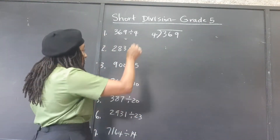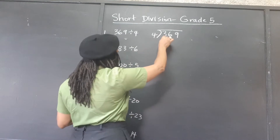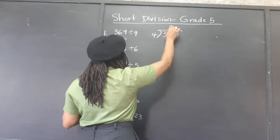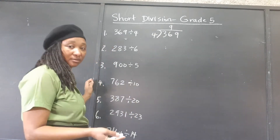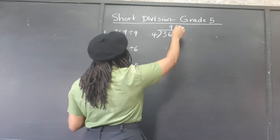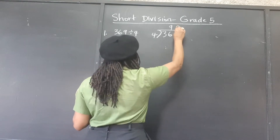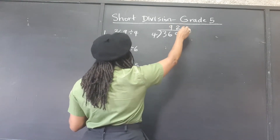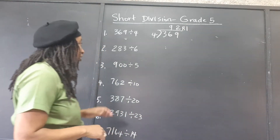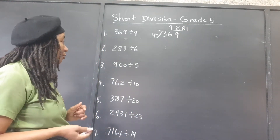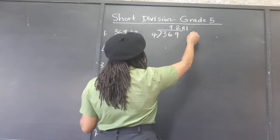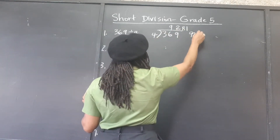So, 4 can't go into 3. 4 goes into 36 nine times with no remainder — it goes into 36 exactly 9 times. 4 goes into 9 two times; two 4s are 8, so there's a remainder of 1. So 4 goes into 369 ninety-two times remainder 1. We can write it just like this, or we can say 92 remainder 1.